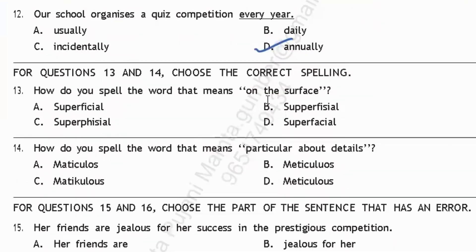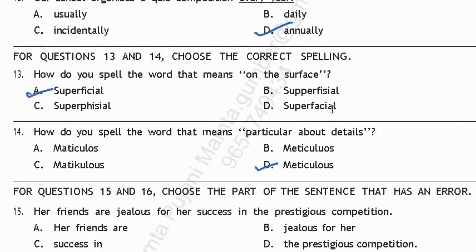For questions 13 and 14, choose the correct spelling. The word meaning 'particular about details' — one option is 'superficial' (S-U-P-E-R-F-I-C-I-A-L), but the word that actually means particular about details is 'meticulous' (M-E-T-I-C-U-L-O-U-S), so option D is your correct answer.